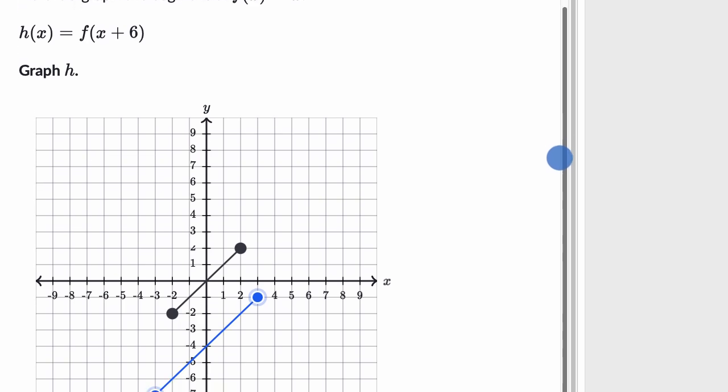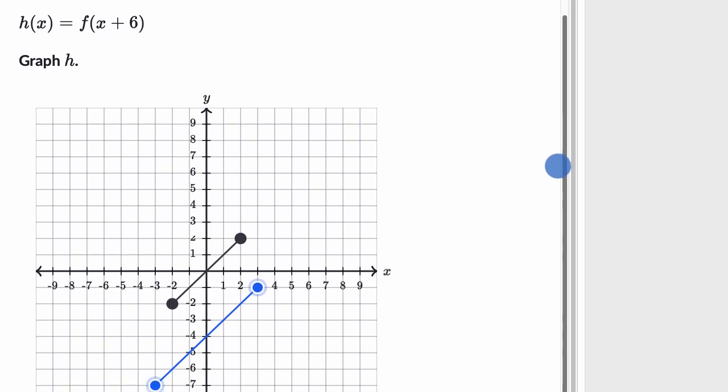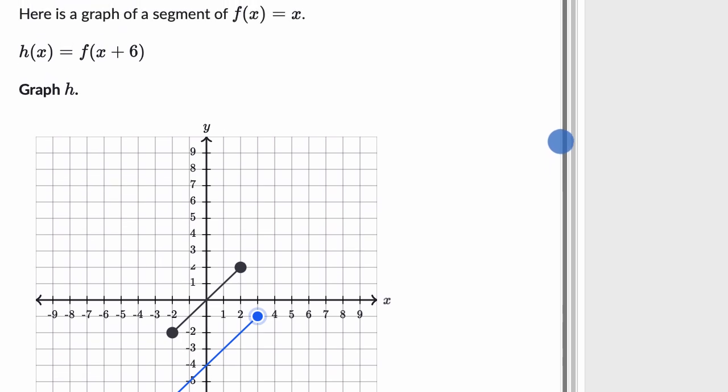So we have to be careful here. You might say, oh, maybe this just shifts up by six, but that's not exactly what's happening here. If this was f(x), and then that whole thing plus six, then yes, we would shift up by six, but something different is happening here.